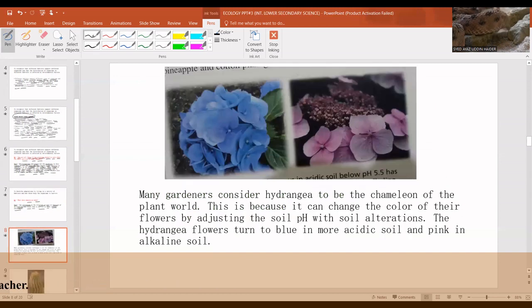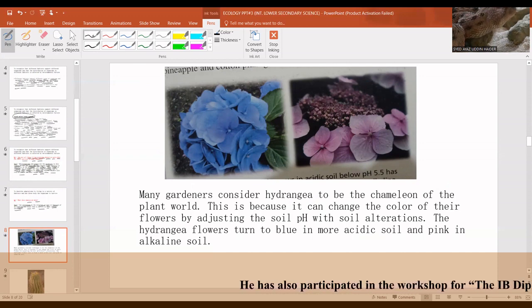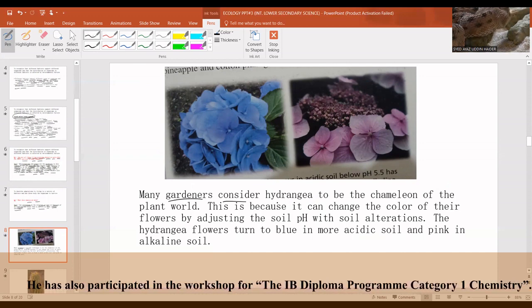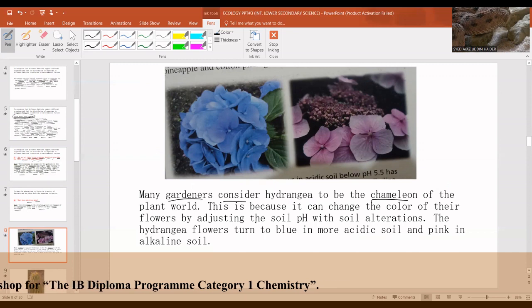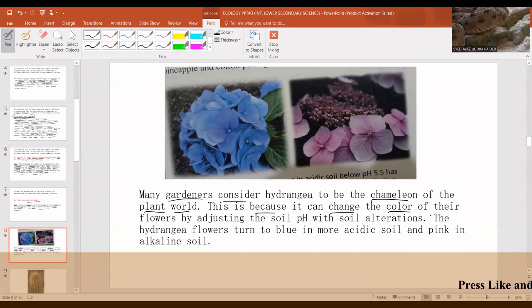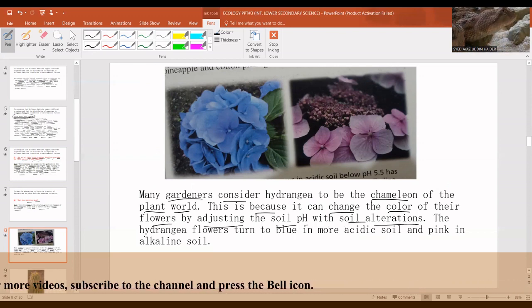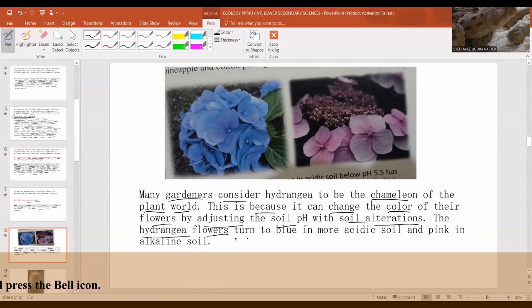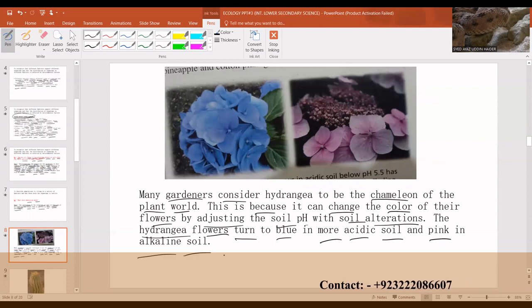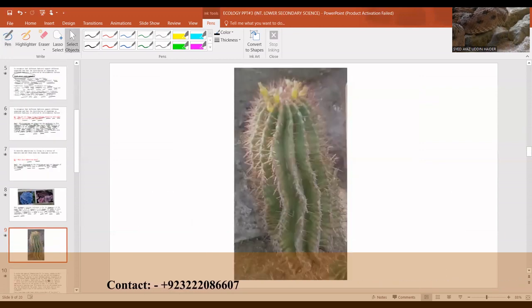These are the diagrams or pictures of hydrangea. Many gardeners consider this plant to be the chameleon of the plant world. The reason is that it can change the color of their flowers by adjusting the soil pH with soil alterations. The hydrangea flowers turn blue in more acidic soil and pink in alkaline soil. So this is a kind of adaptation by this organism.